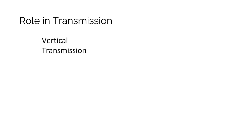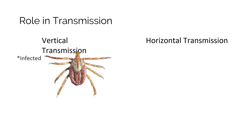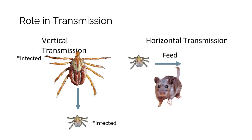In the process of feeding, ticks can infect their hosts with a pathogen. Ticks can become carriers of pathogens through vertical transmission from mother to egg, or through feeding on an infected host, known as horizontal transmission. When feeding on a host, ticks secrete a small amount of saliva that contains anesthetic and anticoagulant properties along with possible pathogens.